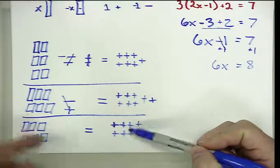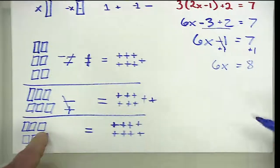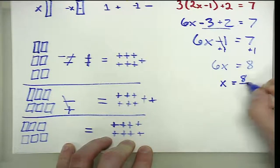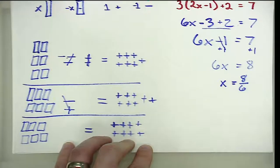So we know because we have 6 X's, we want to sort this into six groups to see how many would go with each X. So what we can do is say that X is equal to the 8 divided into six groups that just hasn't been done yet.